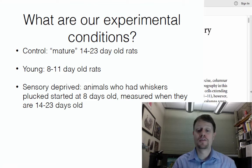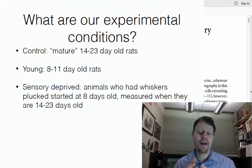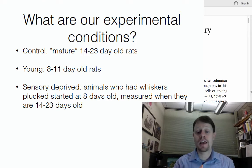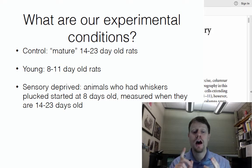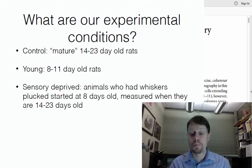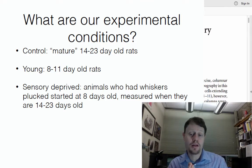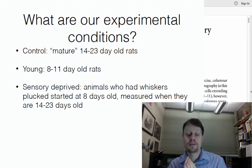From the abstract, we have a sense of three experimental groups: juveniles (14 to 26-day-old animals called 'mature') that we haven't done anything special to; young (8 to 11-day-old) animals we haven't altered; and animals whose whiskers we plucked when they were young, waiting until they become more mature and then looking at their axons.